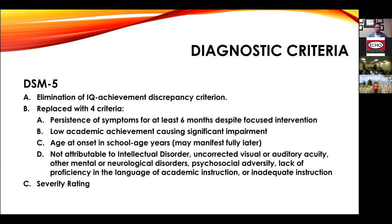Importantly in the DSM-5, these learning disabilities cannot be attributed to intellectual disorders or developmental disorders. If a child has an IQ below 70 and academic achievement below 70, their reading difficulty would be better explained by an intellectual disorder. If their cognitive ability and academic achievement are both less developed than 98% of kids their age, it is not a reading, math, or writing disorder — it is an intellectual developmental disorder.